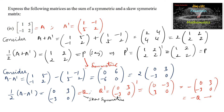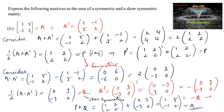We can also observe that P plus Q equals [1,2;2,2] + [0,3;-3,0] = [1+0, 2+3; 2+(-3), 2+0] = [1,5;-1,2], which is matrix A. Hence this matrix can be expressed as the sum of a symmetric matrix P = [1,2;2,2] and a skew symmetric matrix Q = [0,3;-3,0].